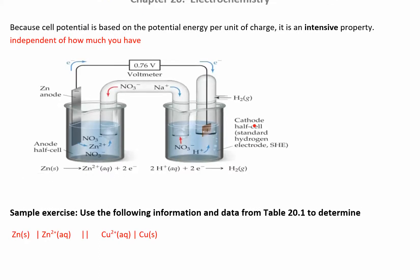Cell potential is an intensive property — it's potential energy per unit charge, and it's independent of how much you have. So after you balance your reaction, you may have a coefficient like a two in front of your zinc, but that doesn't factor into the cell potential at all. Just pull out the numbers from the table as they are. Don't change them. Whatever is in the table, that's what you use.